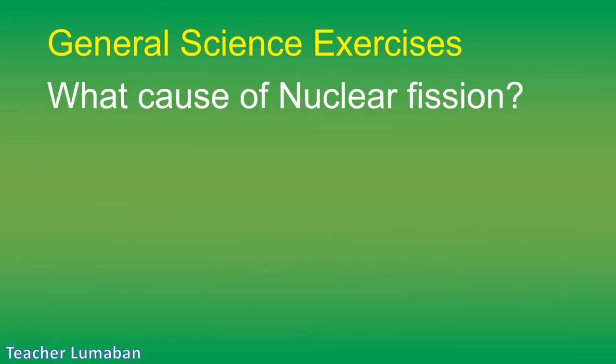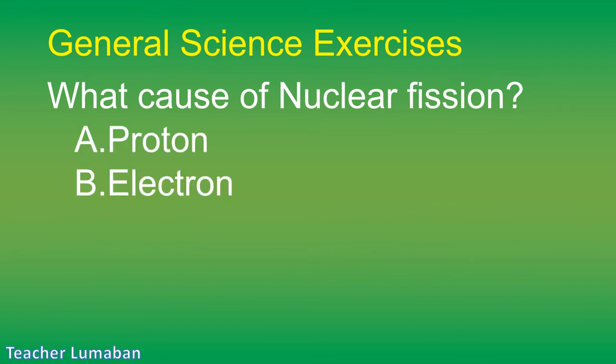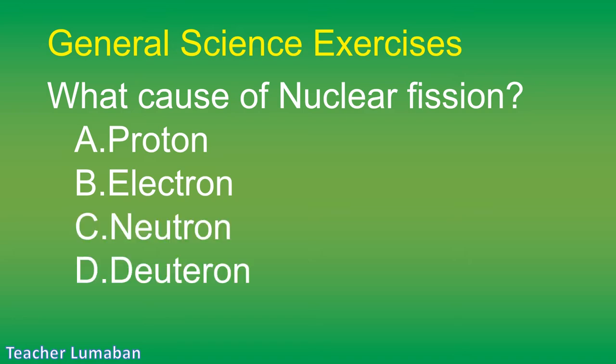What causes nuclear fission? Letter A: proton. Letter B: electron. Letter C: neutron. Letter D: deuteron.